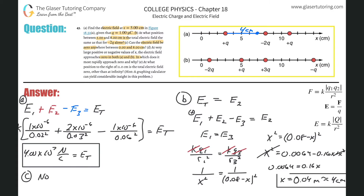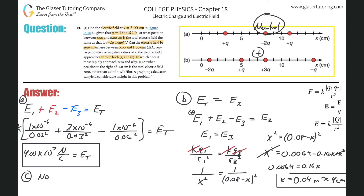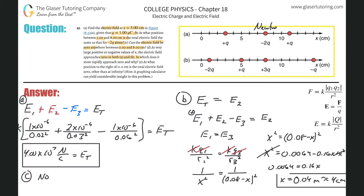Letter D: the electric field approaches zero at large x for both A and B — which approaches zero most rapidly and why? Look at the net charge: in figure A (part b's configuration), positive q, positive q, and negative 2q — the aggregate is neutral. In the other configuration, the net charge is nonzero. A neutral aggregate means the field falls off faster, so the answer is A.